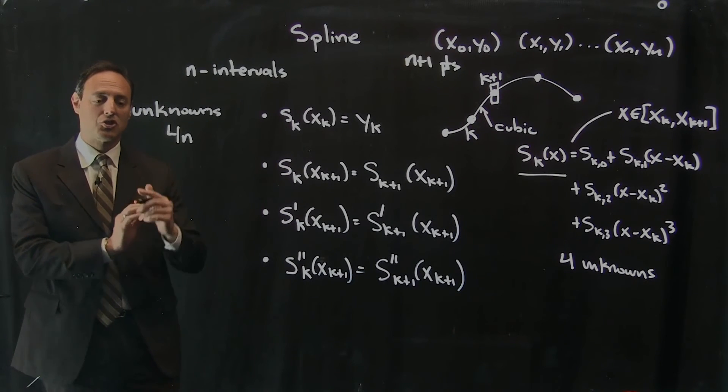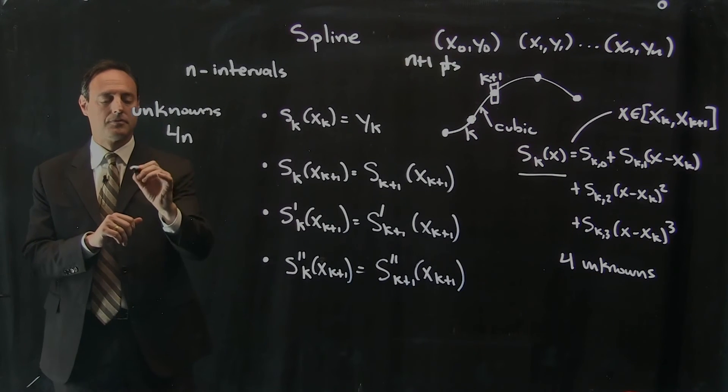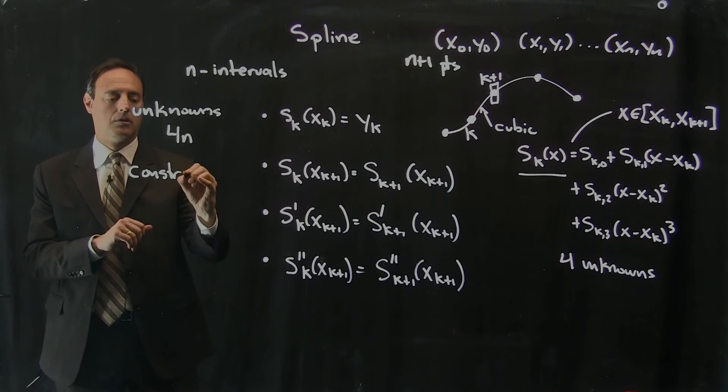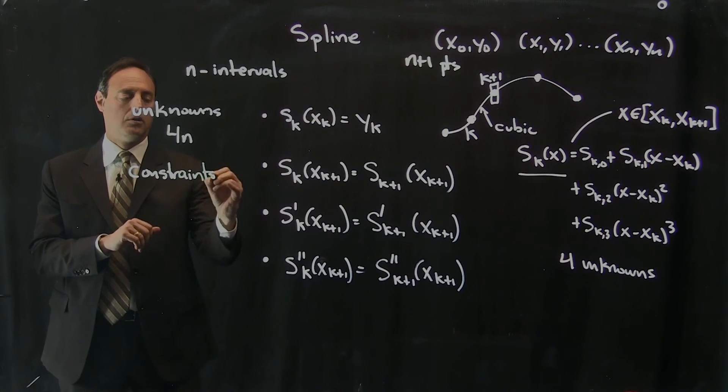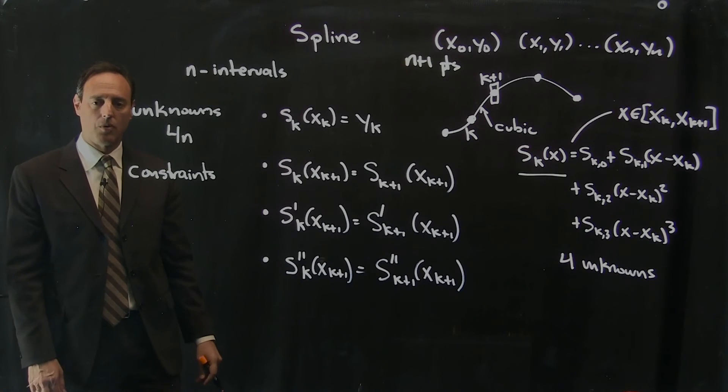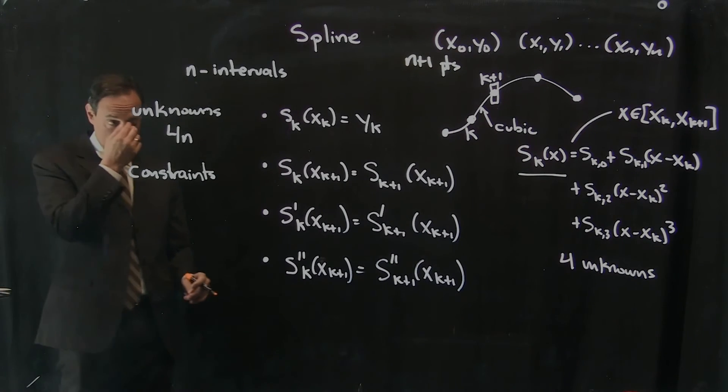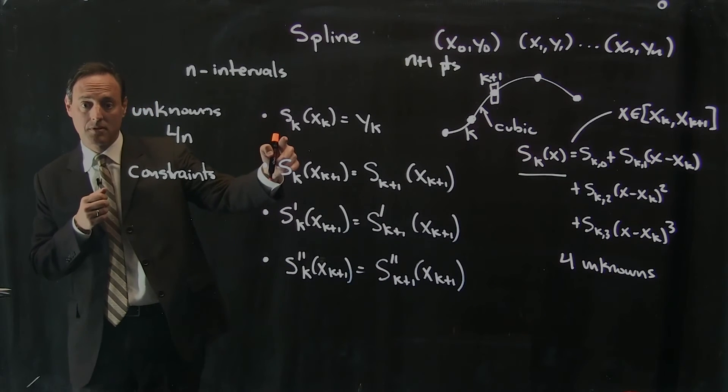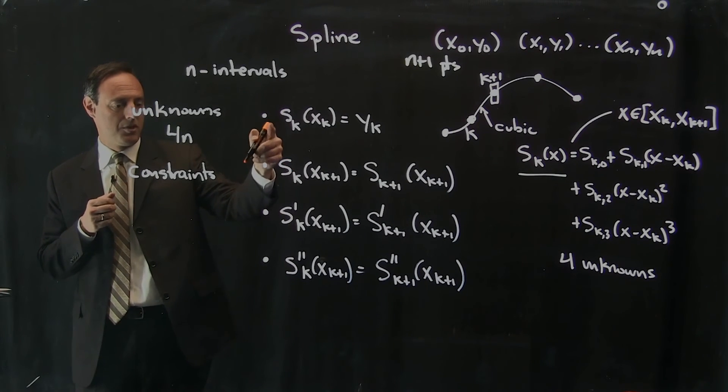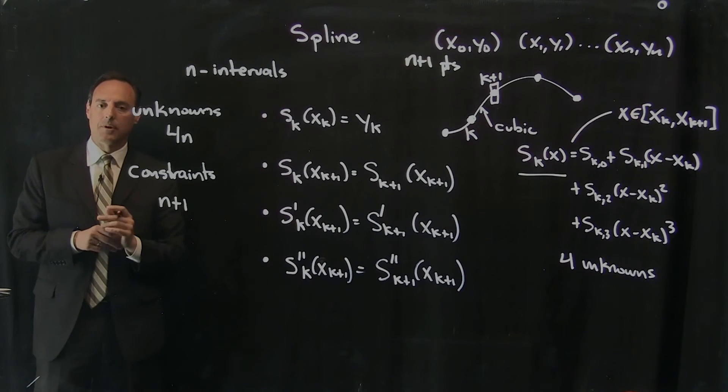those 4n unknowns that I've got to solve for. Now, how many constraints do I have now? So let's talk about the number of constraints. So first there's this one here. It has to go through all the data points. Where there's n plus 1 data points. So this one here tells me there's n plus 1 constraints there because it has to go through every data point.